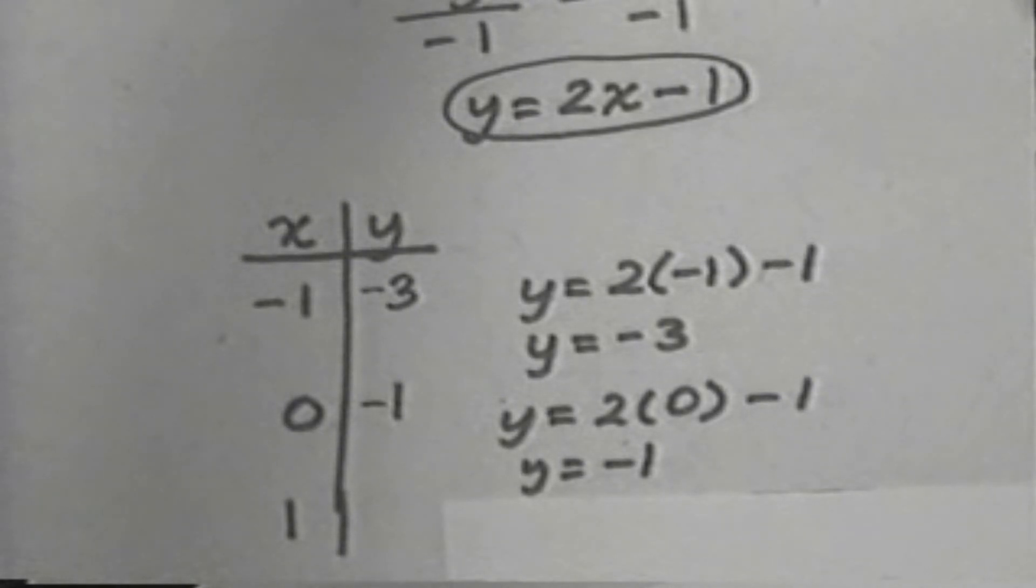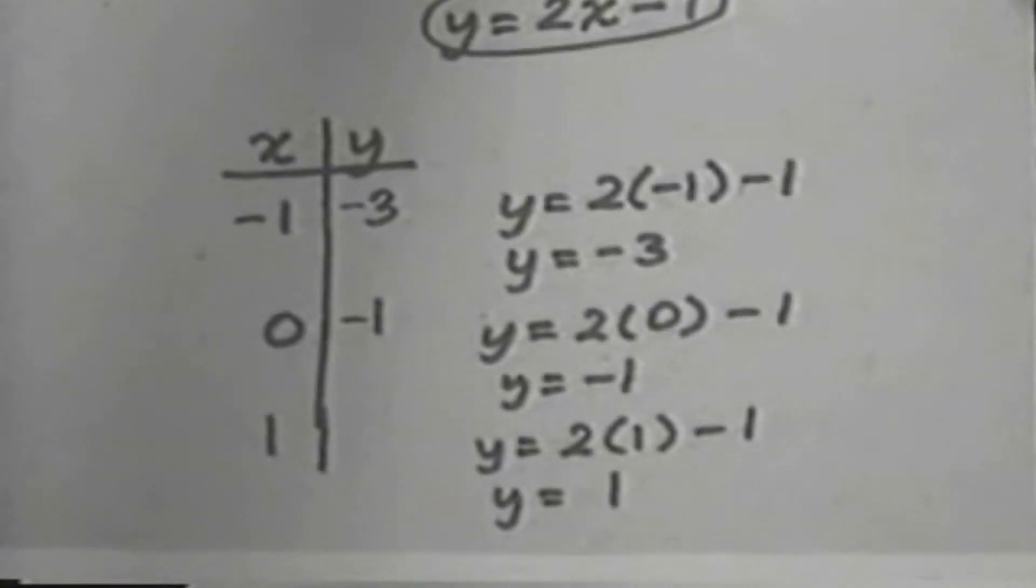Then when x is 1, we fill in 1 in place of x in our equation, and we get y equals 2 times 1, subtract 1. 2 times 1 is 2, 2 subtract 1 is 1, and so we get the y value of 1. That means that our ordered pairs are negative 1, negative 3, 0, negative 1, and 1, 1.